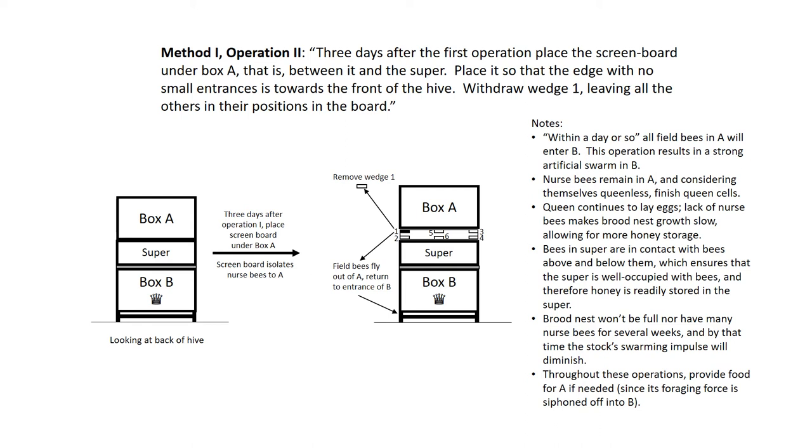Within a day or so, all field bees in A will enter B. This operation results in a strong artificial swarm in B. Nurse bees remain in A, and considering themselves queenless, finish queen cells. Queen continues to lay eggs. Lack of nurse bees makes brood nest growth slow, allowing for more honey storage.